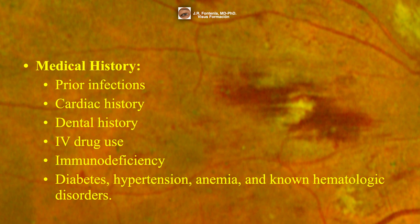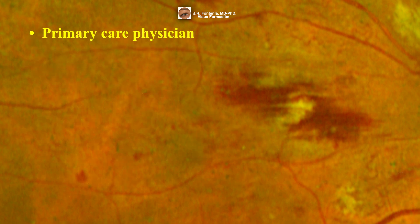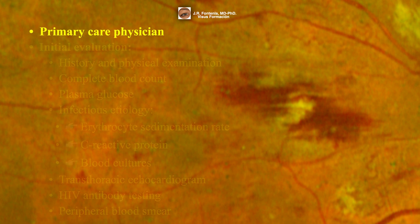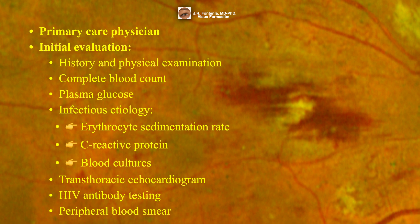A thorough history should be taken with particular attention to medical history of previous infections and other relevant history. If Roth spots are found on routine ophthalmologic examination, referral to a primary care physician for evaluation and workup of systemic disease is suggested. The initial evaluation is based largely on results of a thorough history and physical examination. The complementary tests that will be most useful for the differential diagnosis are listed here.